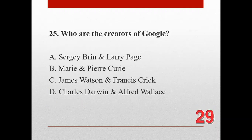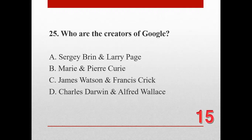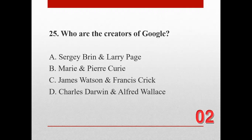Number twenty-five. Who are the creators of Google? A. Sergey Brin and Larry Page, B. Marie and Pierre Curie, C. James Watson and Francis Crick, and D. Charles Darwin and Alfred Wallace.